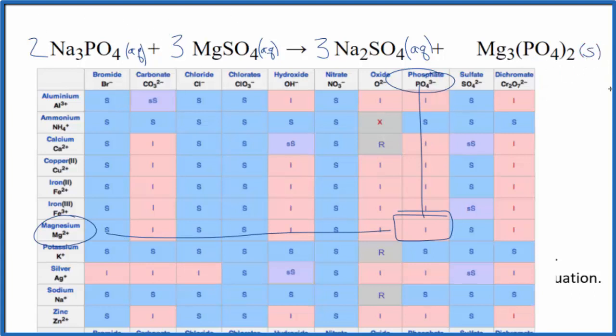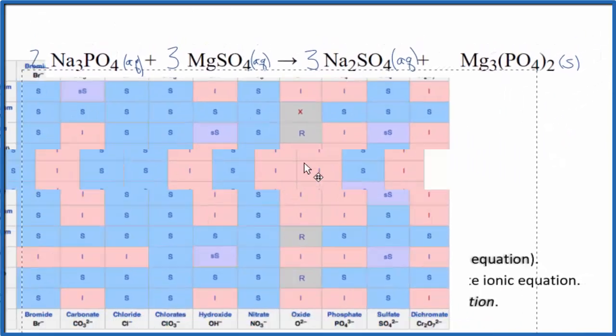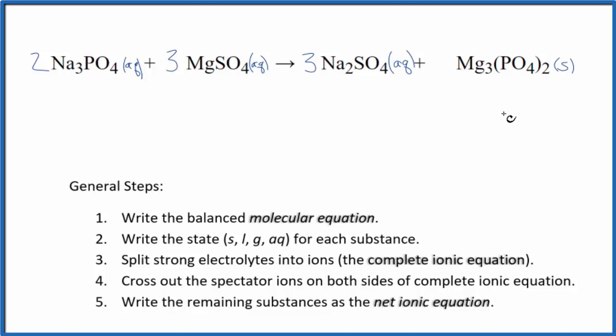In fact, when these two react, this will be a precipitate. It'll fall to the bottom of the test tube as a solid. So we have our states. Now that we have the states, we can split the strong electrolytes into their ions for the complete ionic equation.